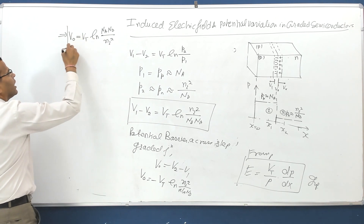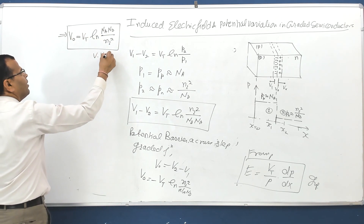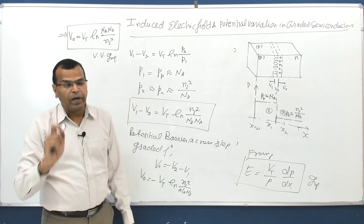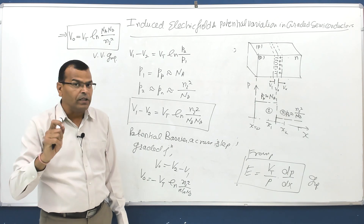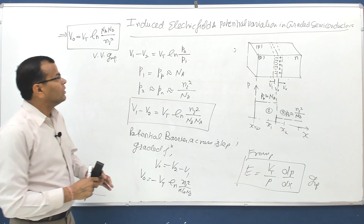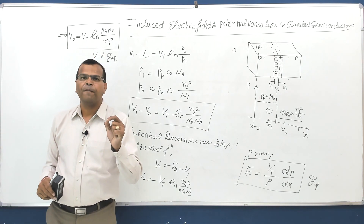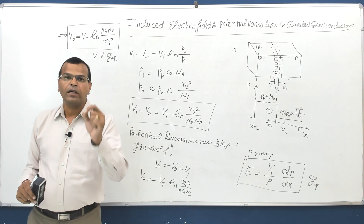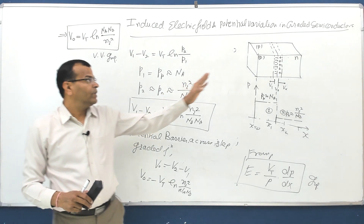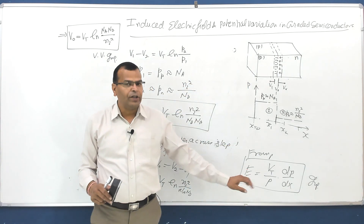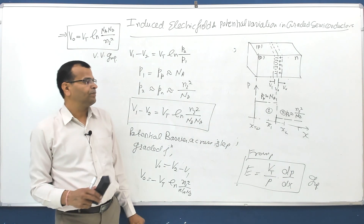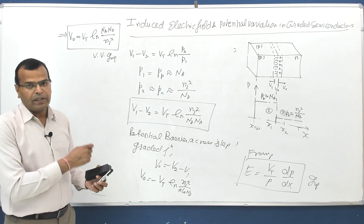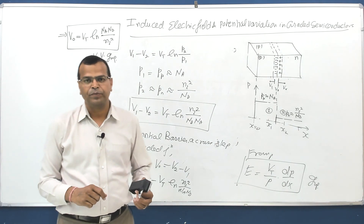This expression for the potential barrier is very important — there are many questions on it in GATE, Engineering Services prelims, IES mains, and civil services mains. This is how we derive the expression for potential variation across the step graded junction, which is the potential barrier. After this, we will look at numerical problems based on this concept. Thank you.